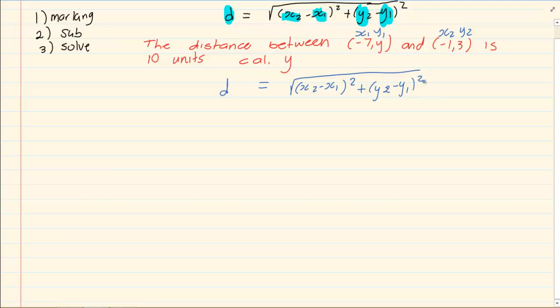So we are going to say our distance is given to us. It's 10 equals, we have x2 as minus 1, minus minus 7, all squared plus 3 minus y all squared.